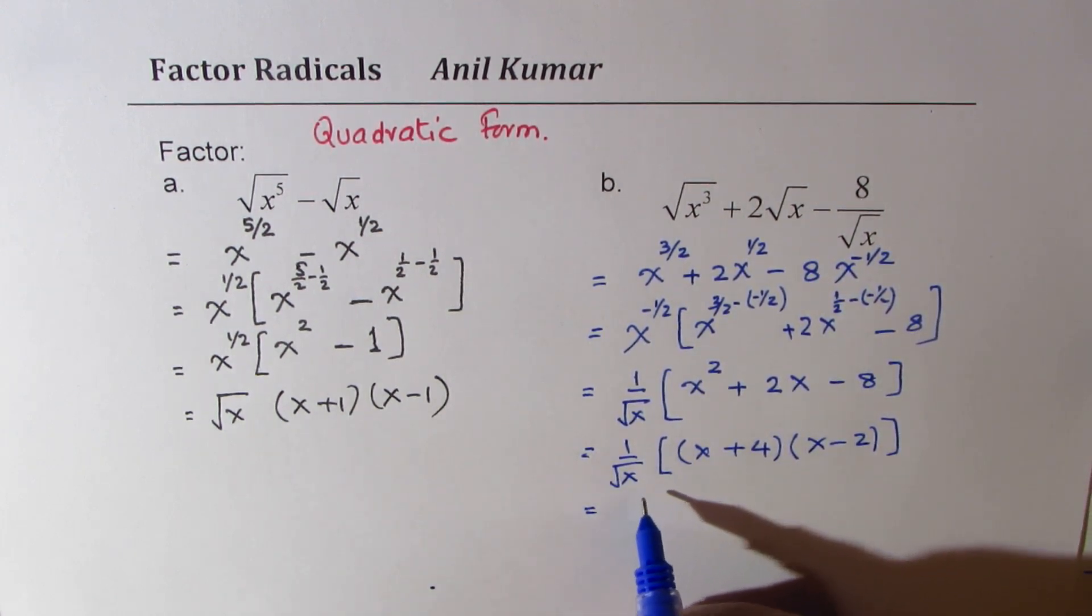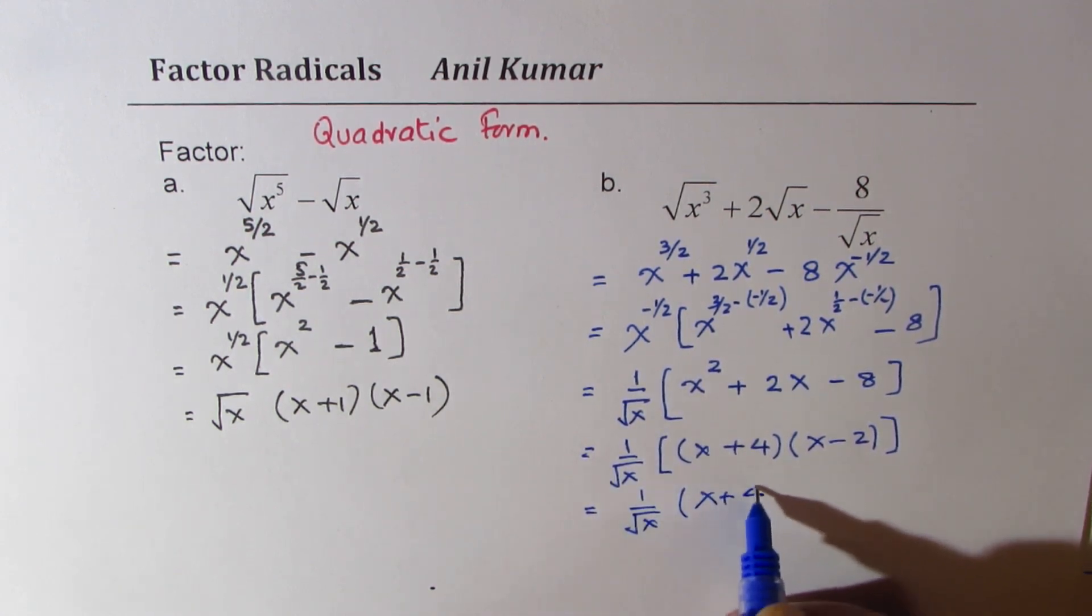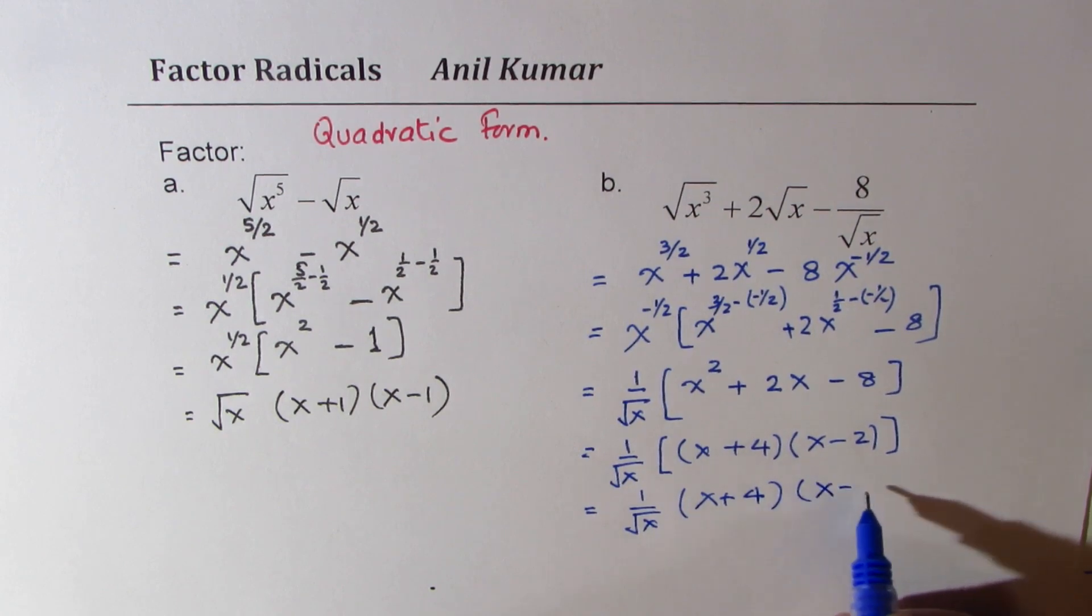So we get the factored form, which is 1 over square root x times x plus 4 times x minus 2.